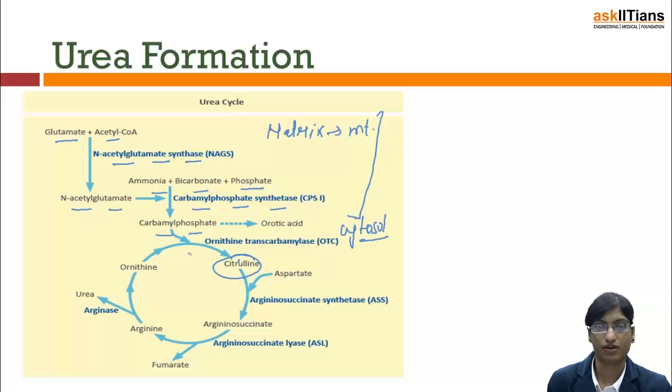And this carbamoyl phosphate in the presence of enzyme ornithine transcarbamylase OTC reacts with ornithine to form citrulline. So citrulline reacts with aspartate. Aspartate enters into the story. And enzyme is ASS, argininosuccinate synthetase. And it forms argininosuccinate.